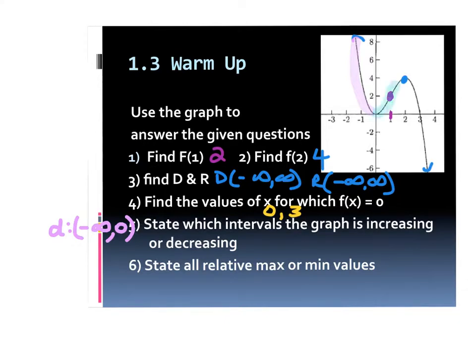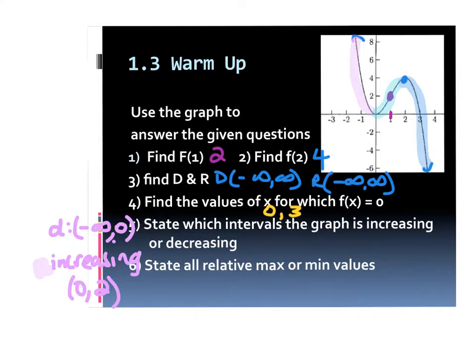Then the next shift goes from 0 to 2, which is increasing — parentheses on both ends. And then it goes back to decreasing from 2 to positive infinity. A point itself will never get a bracket when describing increasing or decreasing, because a point is a dot — it's not moving up or down. The only time you'll see a bracket is if the graph starts or stops constant.